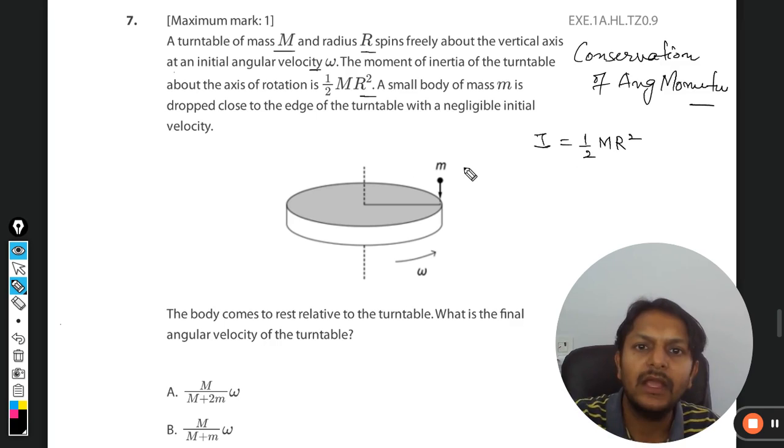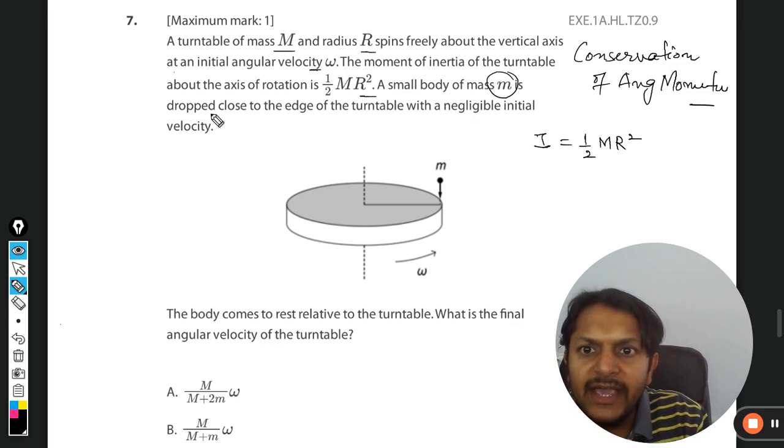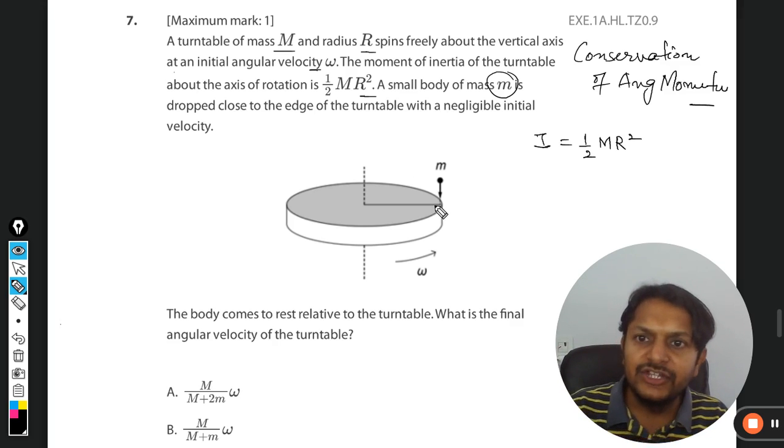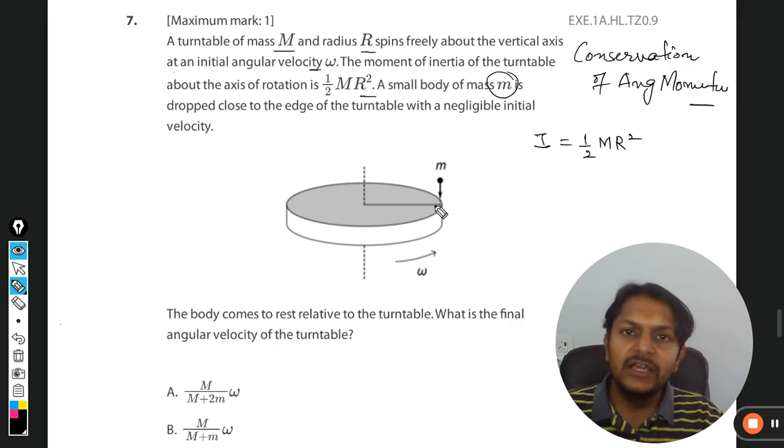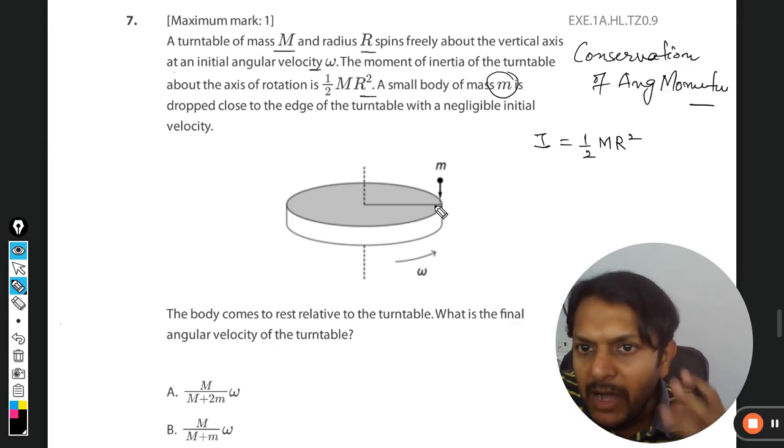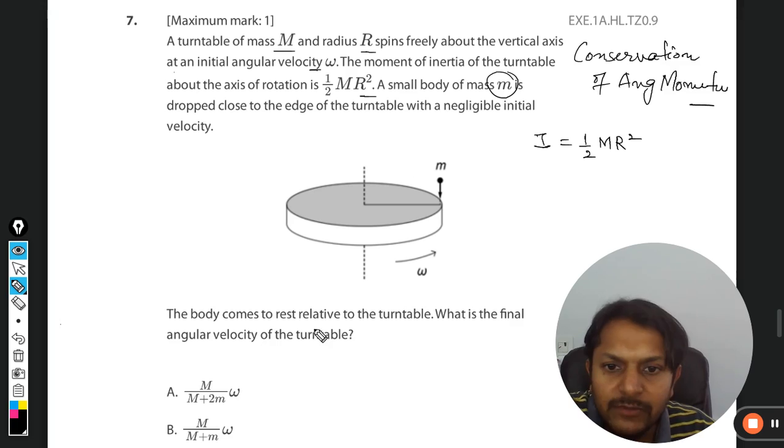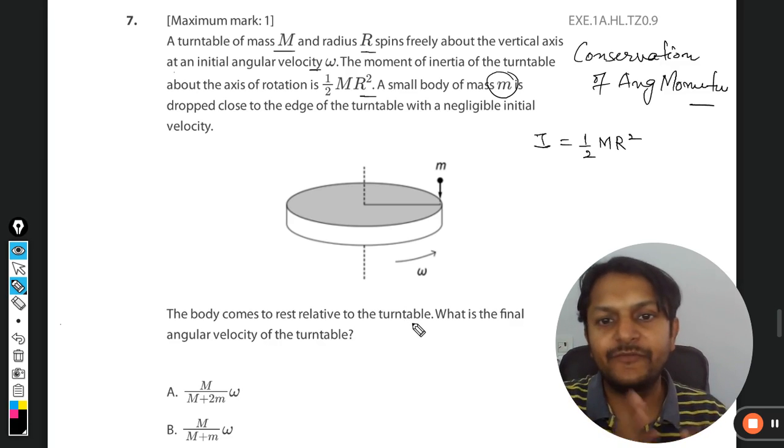velocity, so this mass was earlier not moving in circular fashion. The body comes to rest relative to the turntable. What is the final angular velocity of the turntable? So overall, what is happening? First of all, there is a turntable which is turning like this, and everything is given for it: